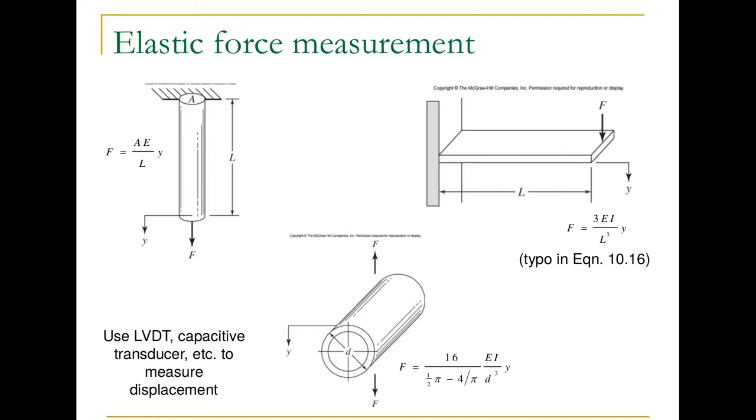Here are some other components that are elastic. Here we have a rod that is undergoing axial strain. We're applying a force in the axial direction and there's a displacement delta L. So the force then is the area times the modulus of elasticity for that material times the displacement generated by the force divided by the length.